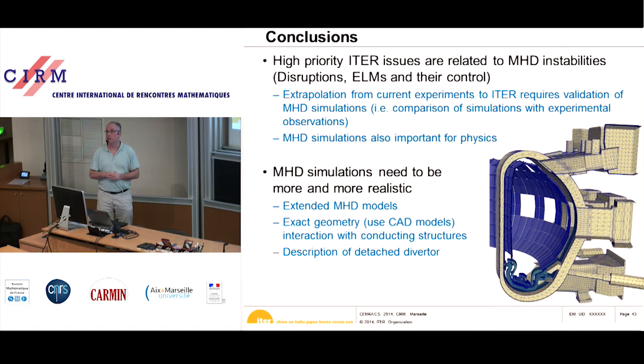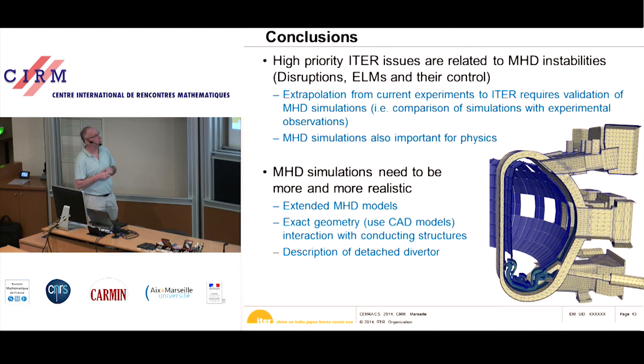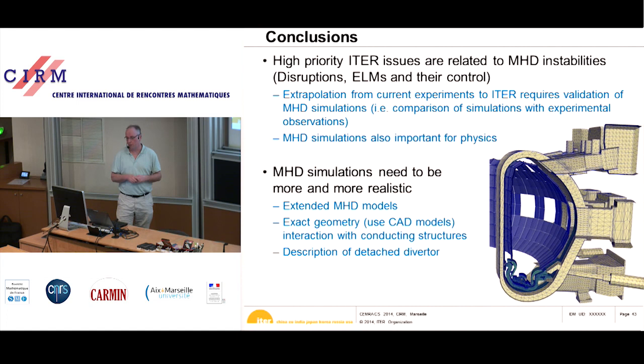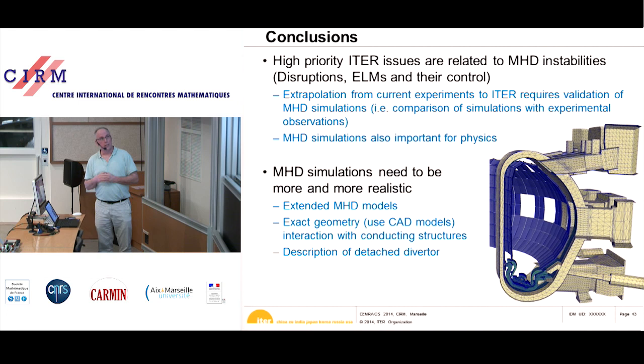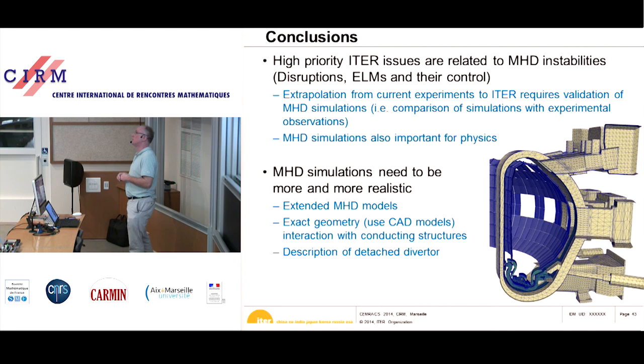In conclusion, the high priority issues for ITER are related to MHD instabilities — specifically disruptions and ELMs and their control. For this we need validation of MHD simulations on current experiments for extrapolation to ITER, and we need to go to more and more realistic simulations to describe the experiments in greater detail. Thank you very much.